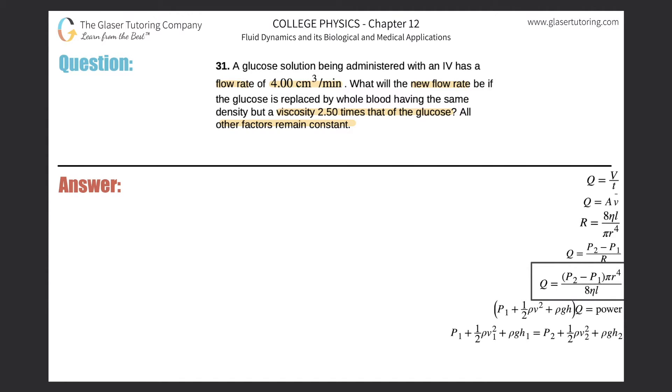Move the viscosity from the right denominator and bring it on up to the left numerator. So now this is Q multiplied by the viscosity. Equals then P2 minus P1 times pi R to the fourth all divided by 8 times L.